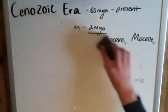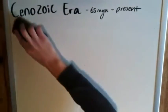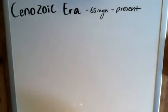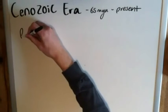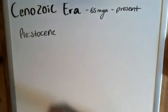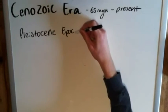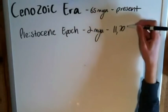After the Tertiary Period we have only two more epochs, which fit into the Quaternary Period. These two are slightly more interesting, especially the final one as it relates to us. Directly following the Tertiary Period, we have the Pleistocene Epoch, which spans from two million years ago to about 11,700 years ago.